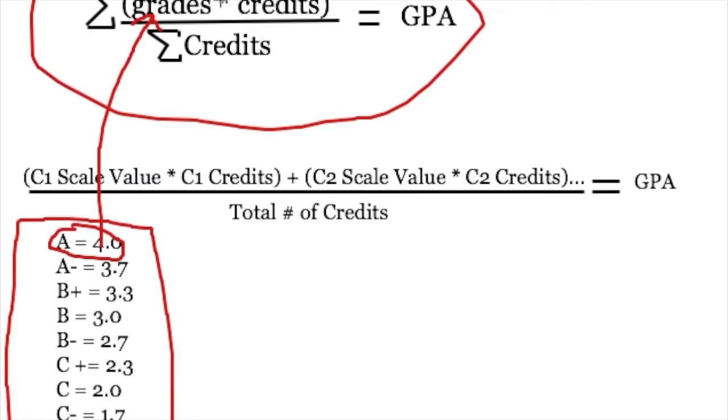The top part of the formula here, the numerator, which is the top part of the fraction, that's going to be the sum total of all of the grade scale values times the credits. And then what you do is you add up the total number of credits for each class and that's going to go down here in the denominator or the bottom part of the fraction. And so that's going to give you your GPA.